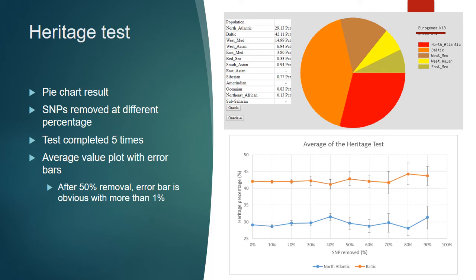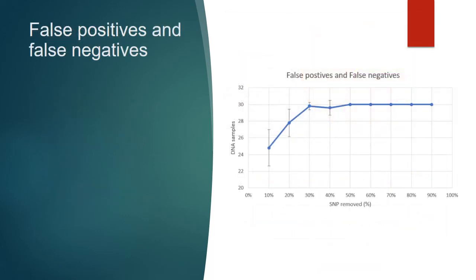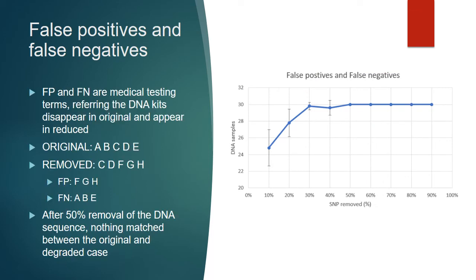Our conclusion is that DNA becomes unreliable at about 50% SNP removal. We also did a false positive and false negative test: if the original case has entries A, B, C, D, E and the degraded case has C, B, F, G, H, then F, G, H are false positives and A, B, E are false negatives. After 50% removal, there were 30 false positives and negatives, meaning no matches were found. This further proves that DNA becomes unreliable and unidentifiable at 50% SNP removal.